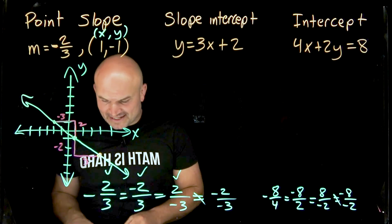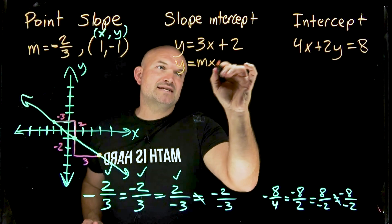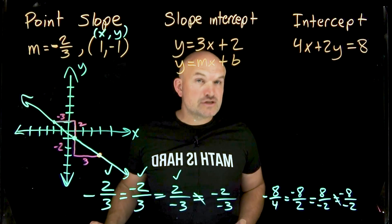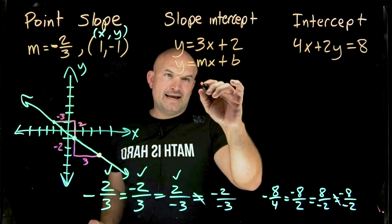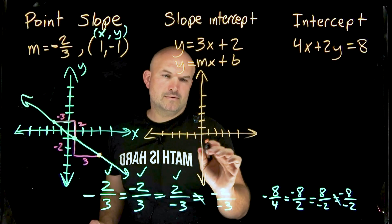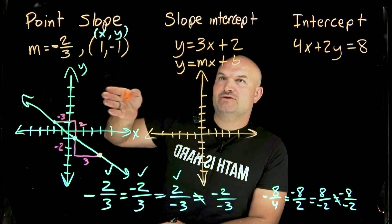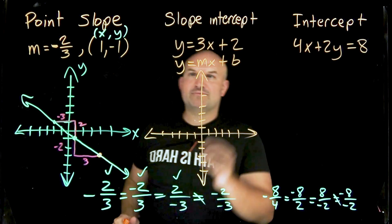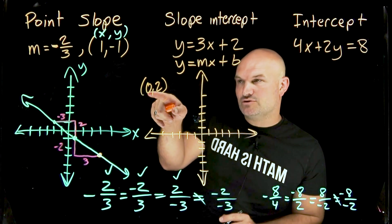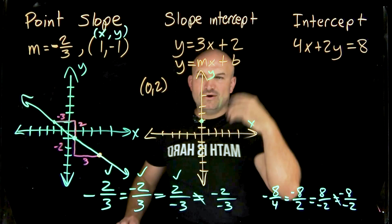Now let's get into slope-intercept form, which is a preferred method for graphing. Slope-intercept form is y = mx + b, where b is your y-intercept — where the graph crosses the y-axis — and m is your slope. The y-intercept of two means the point is (0, 2), since it lies on the y-axis where x equals zero. So we start by plotting that point at y equals two.